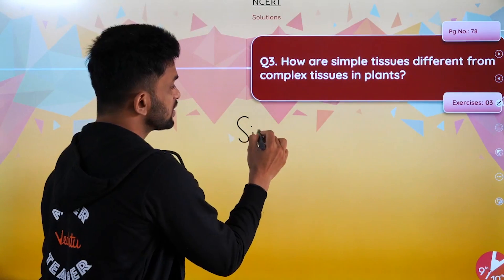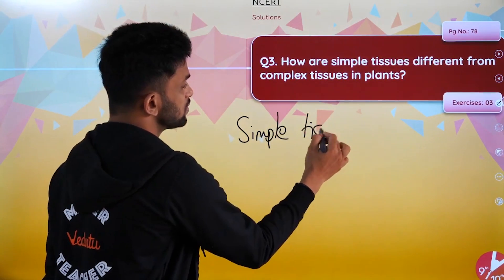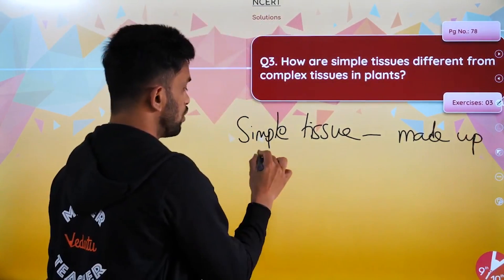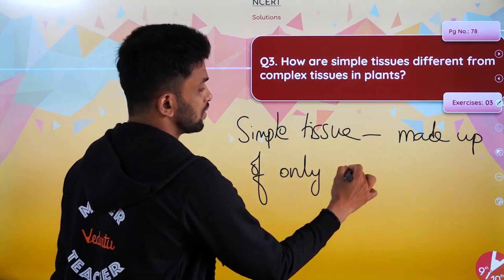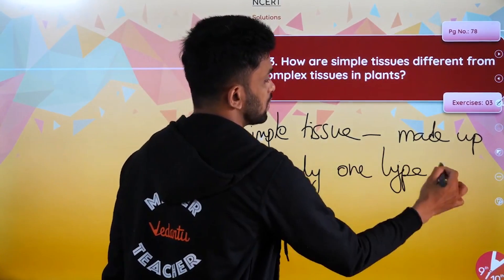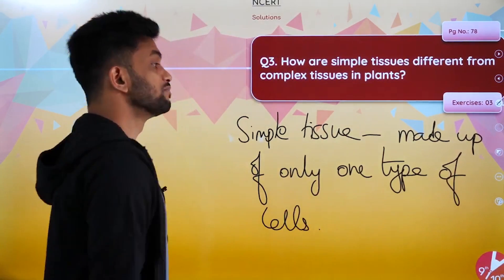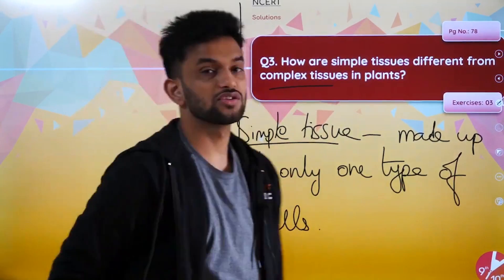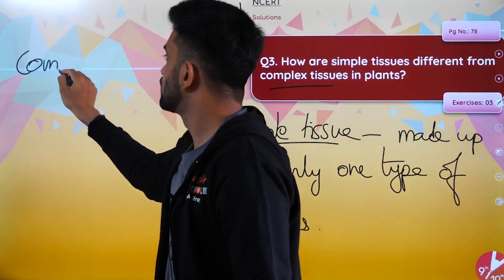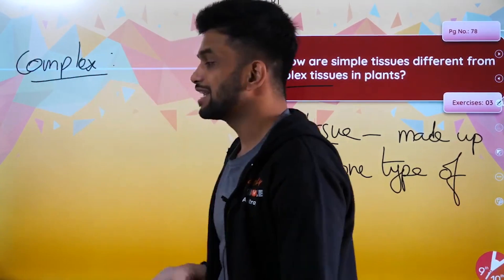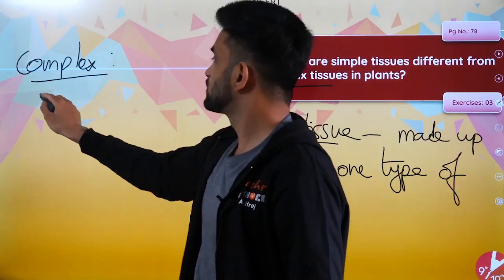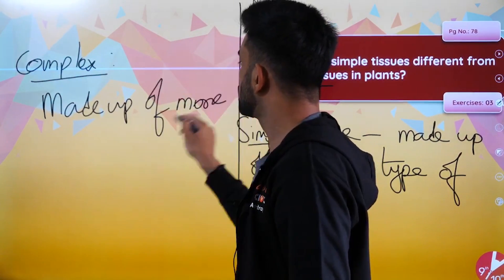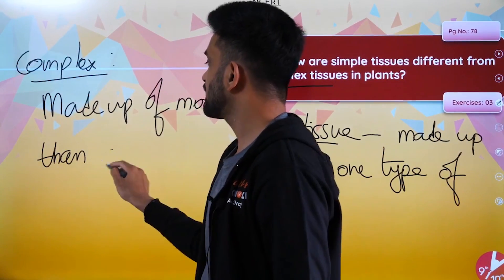What's a simple tissue? A simple tissue is a tissue which is made up of only one type of cell. When we talk about complex tissue, what is it? Exactly - it's made up of more than one type of cell.